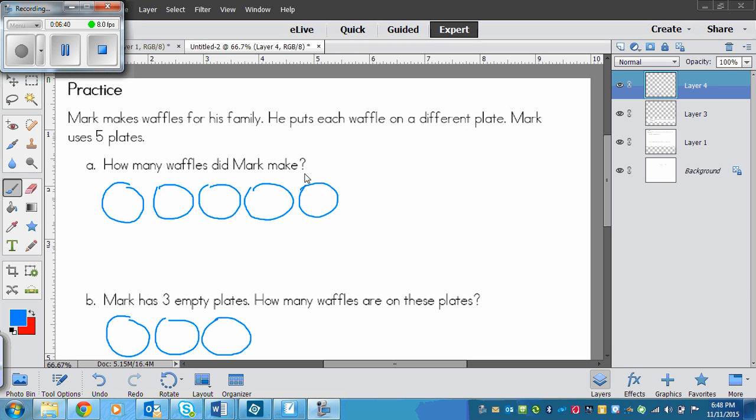So first off, how many waffles did Mark make? So I drew five plates because it says he uses five plates and puts a waffle on each one. So just to visualize, we can draw a waffle on each plate. Here's my waffles. And so we know we have one waffle on each plate. Our two numbers are five and one. So we could write our equation, which would be, for our multiplication fact, 1 times 5. So one waffle on five plates, and that equals 5.